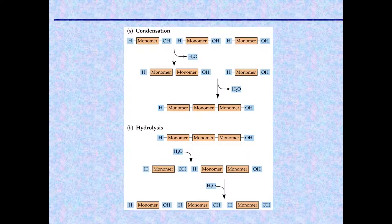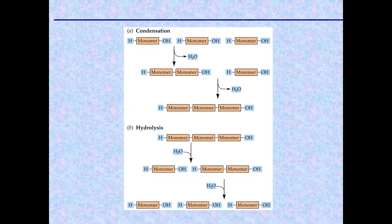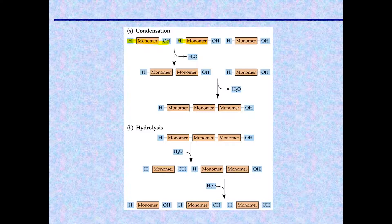These four groups of molecules are all polymers. They are made up of building blocks linked together by covalent bonding, and so they are polymerized — long polymers built up from individual monomers. As they are linked together, the kind of reaction in which they are linked is called a condensation reaction.